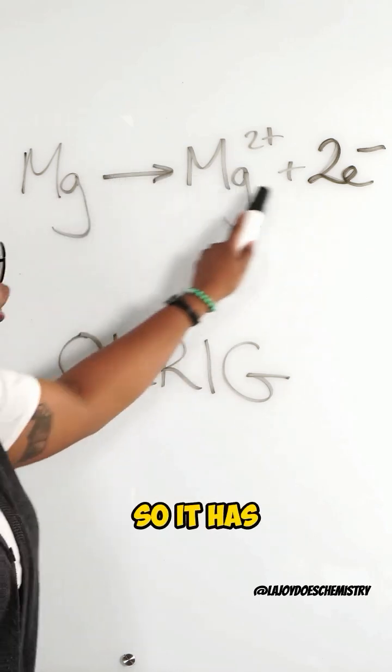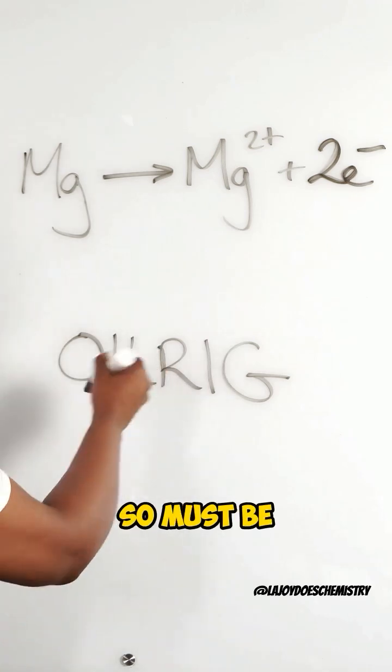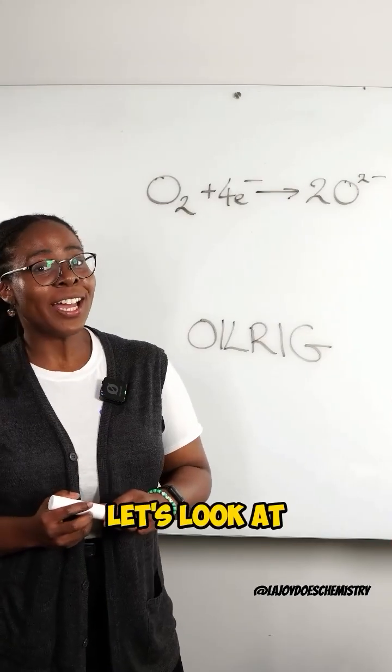from neutral to two plus, so it has lost two electrons, so must be oxidation. Let's look at another one.